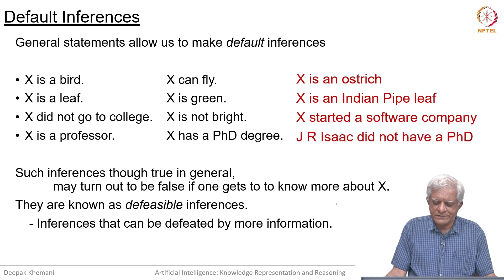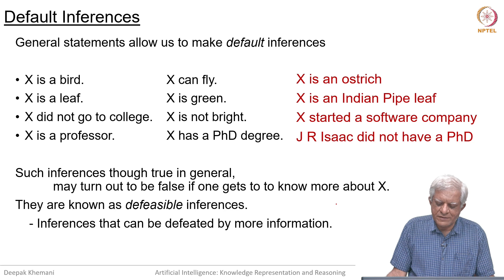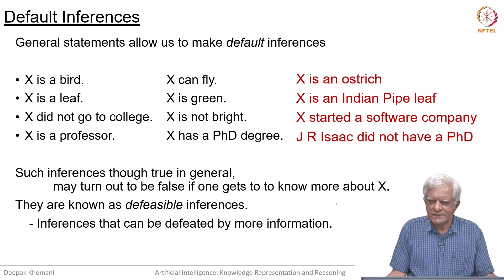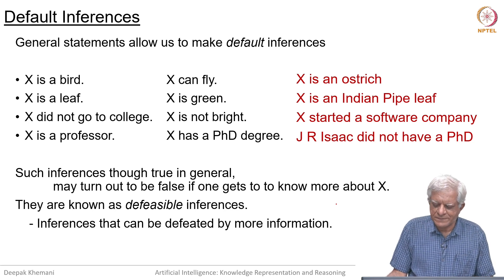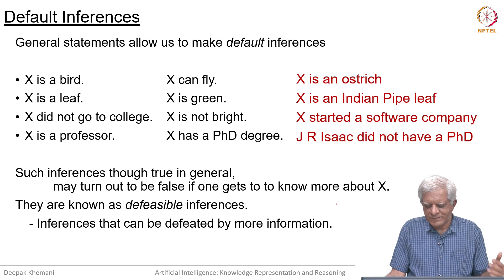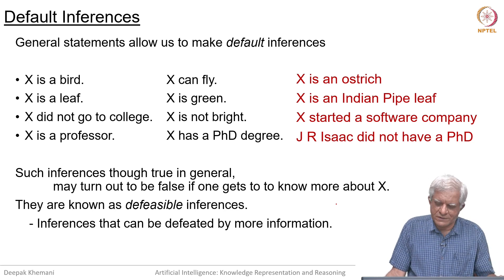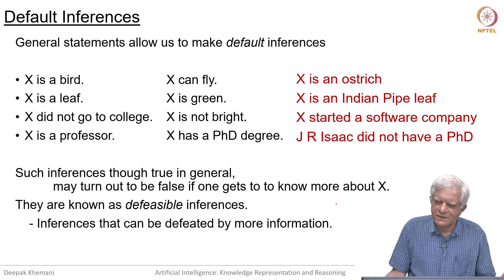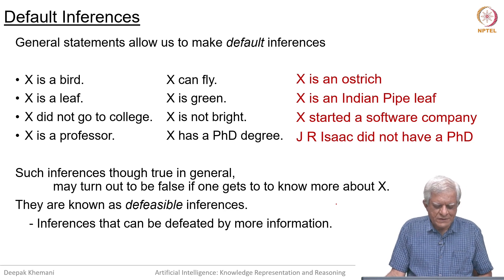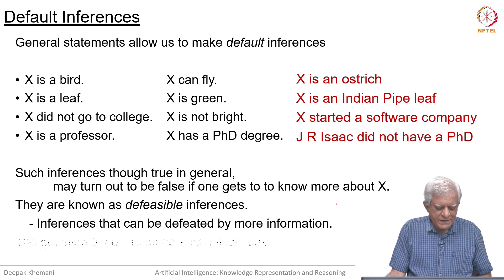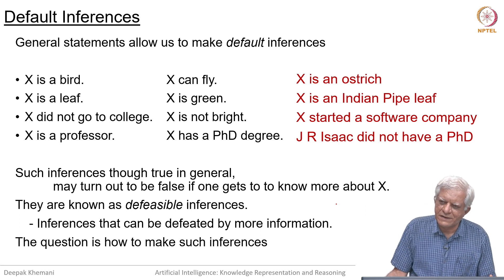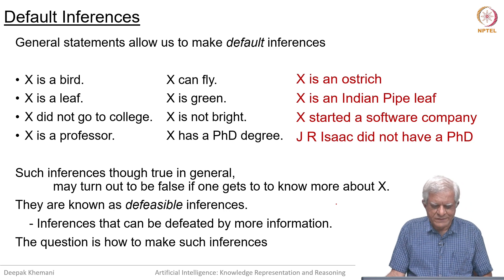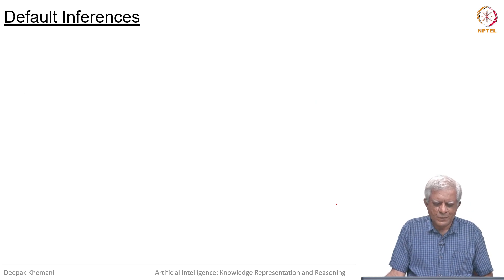X is a professor, but I had one of my favorite professors when I was a student was J R Isaac, very revered and respected, but he did not have a PhD because at that time one could become faculty members without having a PhD. Such inferences are true in general, but may turn out to be false when you get to know more about x. The question that we want to ask is how to make such inferences? How to build a machinery that will make such inferences?